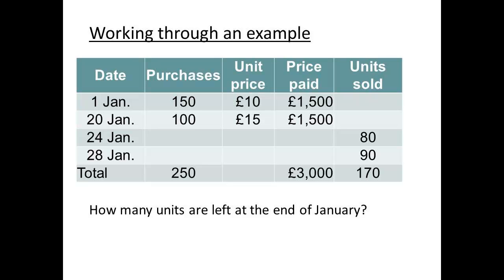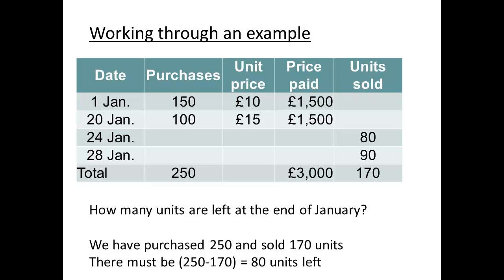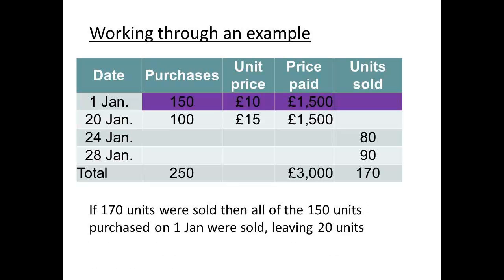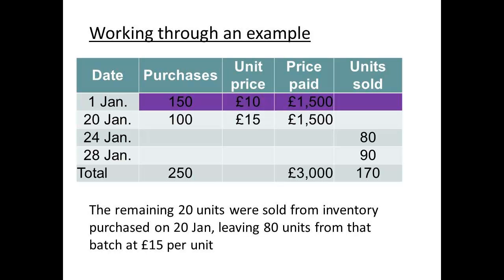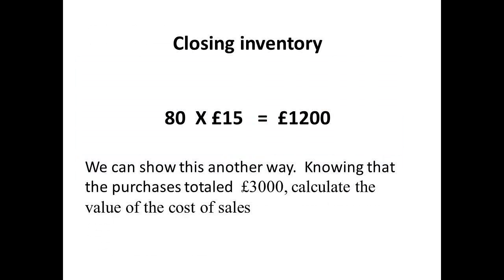We are going to work through a typical example to show the effect of using FIFO and AVCO. The first thing we need to do is determine the number of units left in inventory. We purchased 250 units and sold a total of 170 units, so the number of units left in inventory must be 80. Using FIFO, if 170 units have been sold, then all of the units purchased on the 1st of January for £10 have been sold, with another 20 units to account for. These must have come from inventory received on the 20th of January, leaving 80 units in a batch that cost £15 a unit. So the closing inventory has a value of 80 times £15, which equals £1,200.